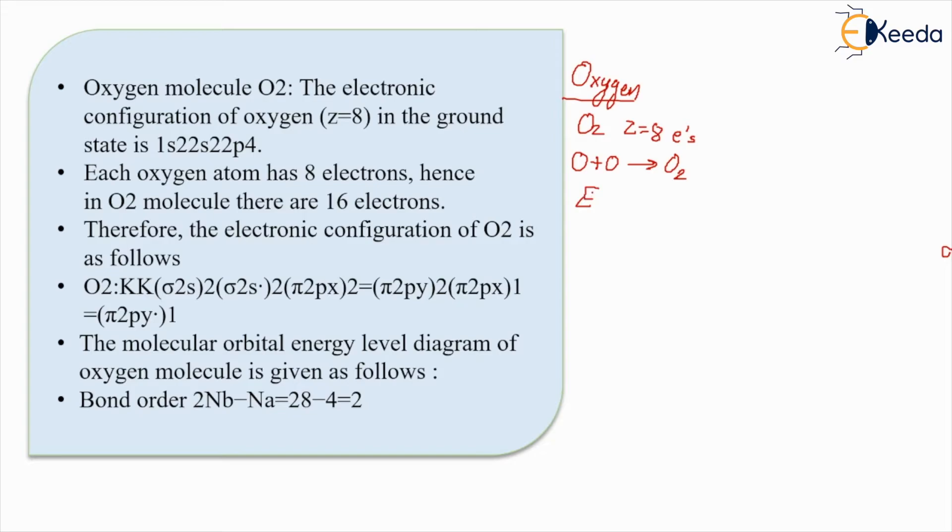Now instead of writing the entire electronic configuration I'm just writing the short form of it. What will it be for eight electrons? Let's count: 1s2, 2s2 - so how many are already done out of eight? Four are already done, so four are remaining: 2p4.